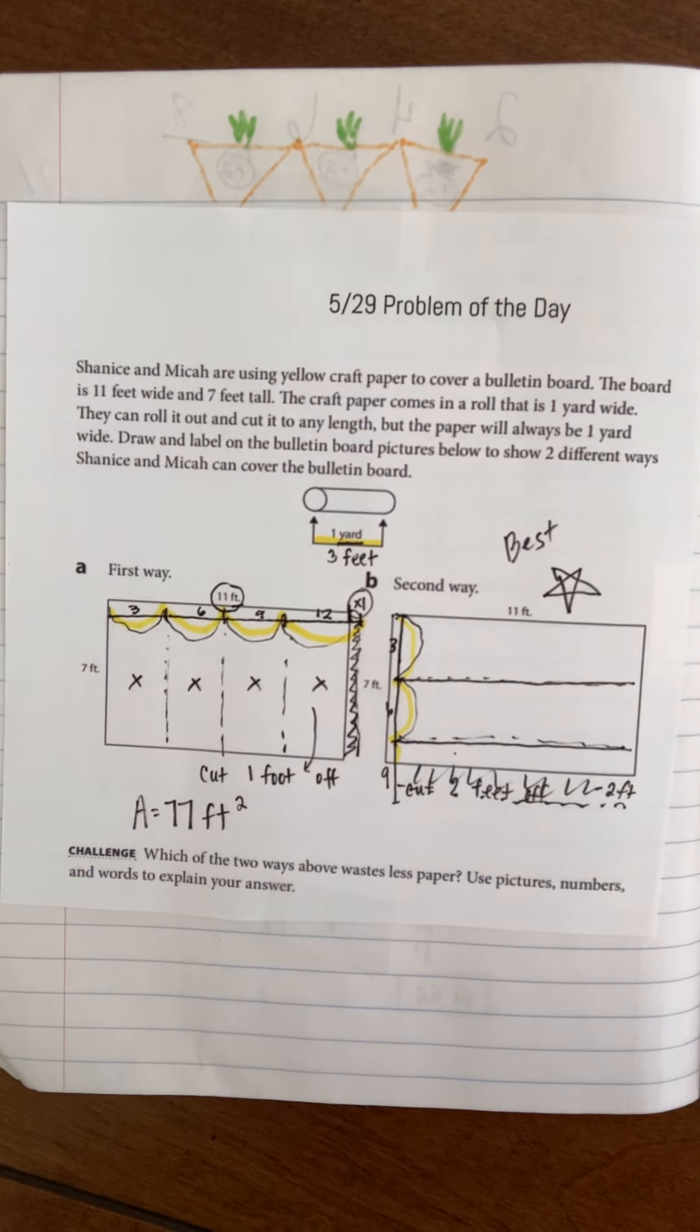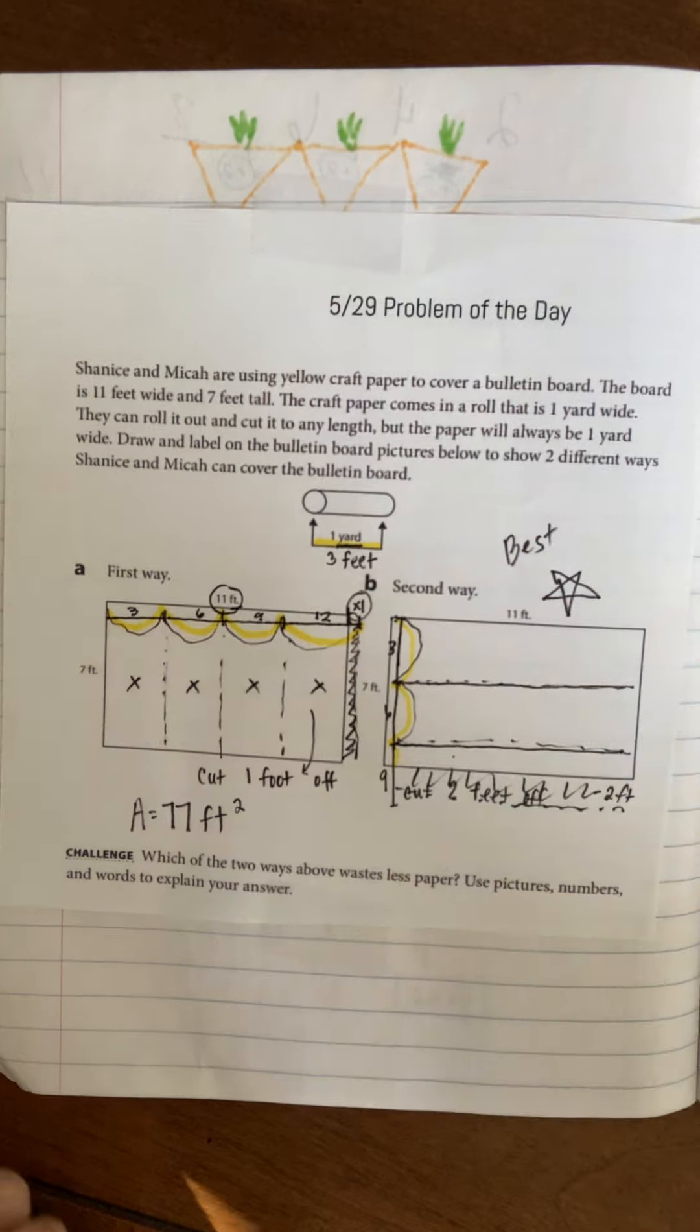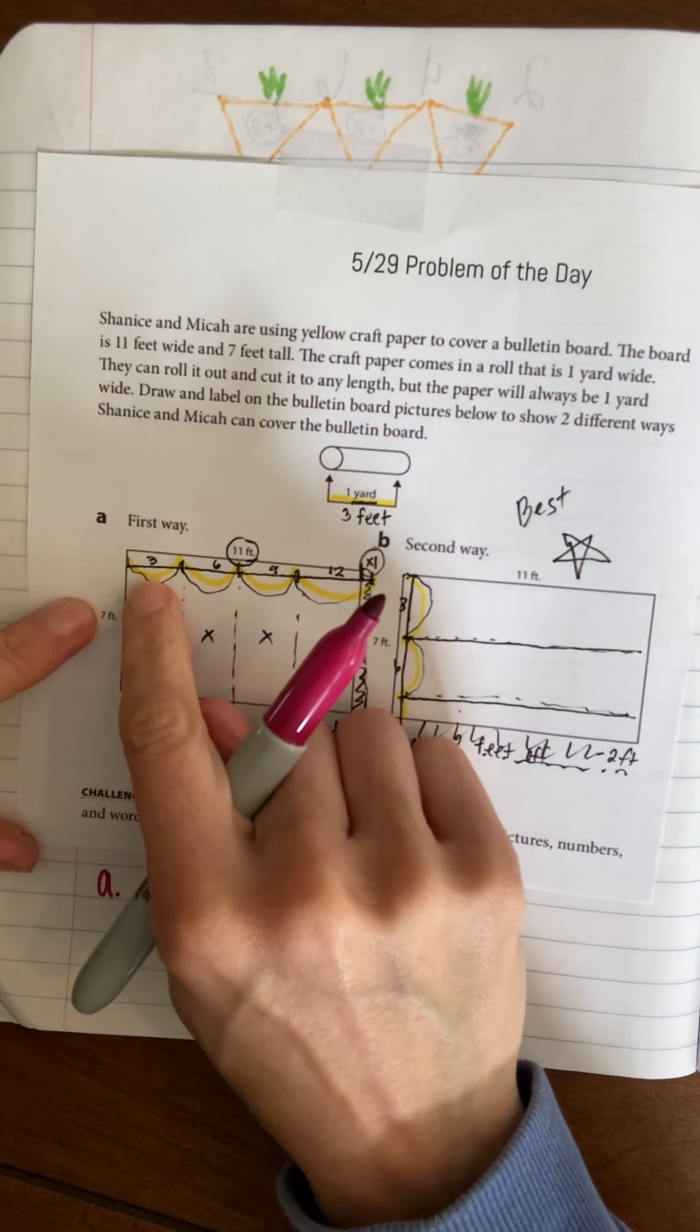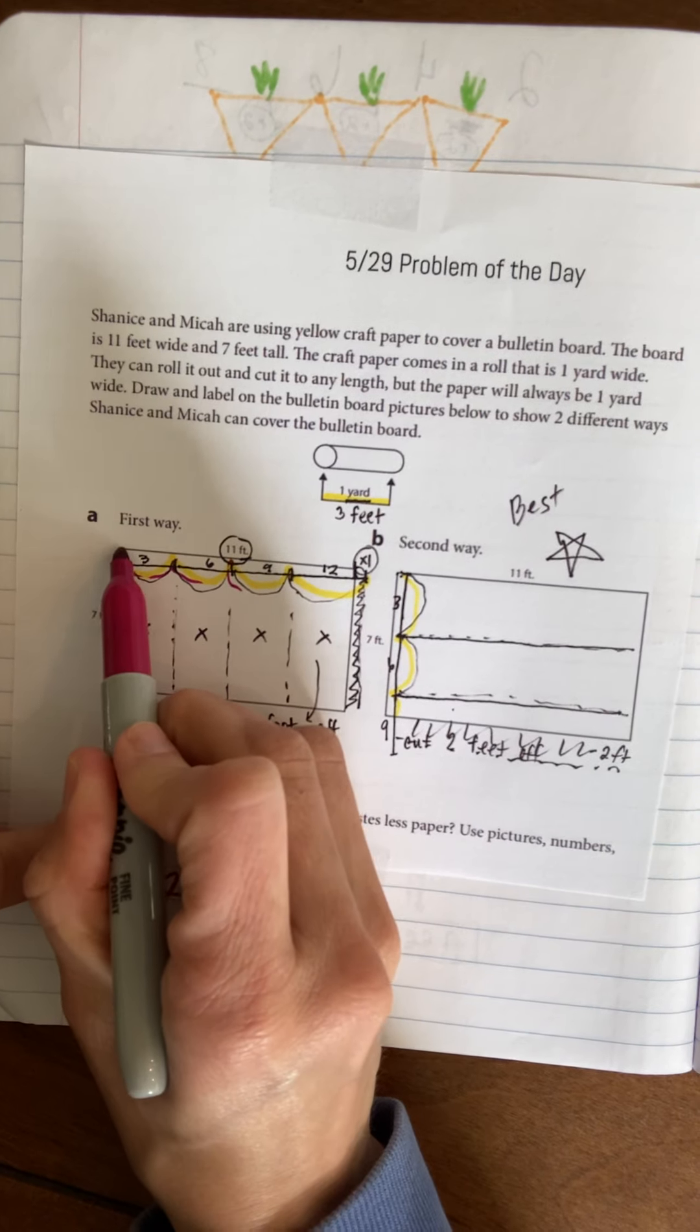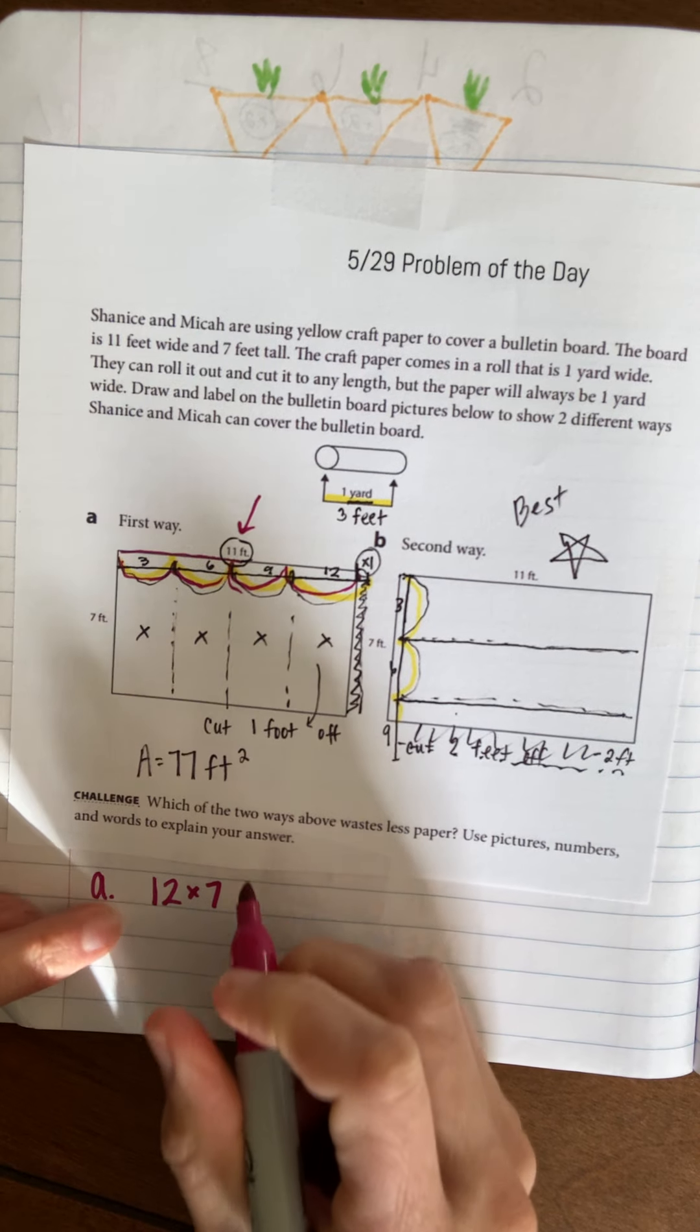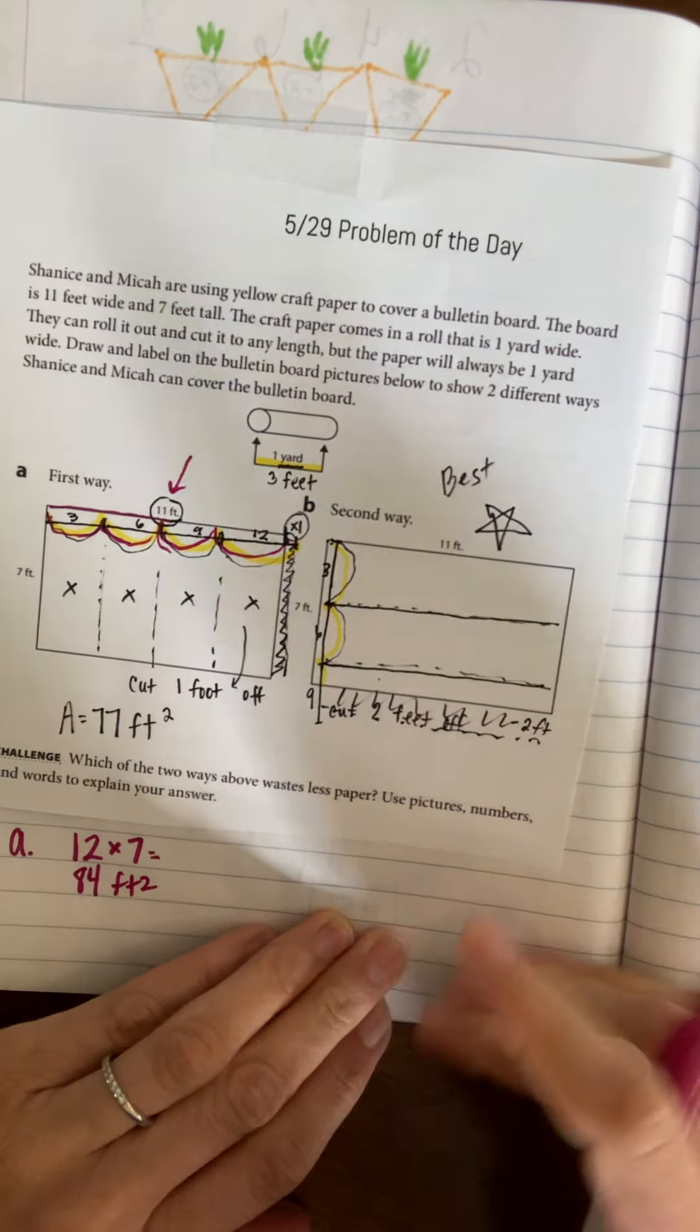One more thing before I close out the video - since this is a review, I want to make sure I fully answer it. If you used option A, you used 3 feet - 3, 6, 9, 12. So you used 12 feet by 7 feet, because you had to use 12 even though this only asked for 11. So 12 times 7: 12, 24, 36, 48, 60, 72, 84. So 84 feet squared is what you used for A.